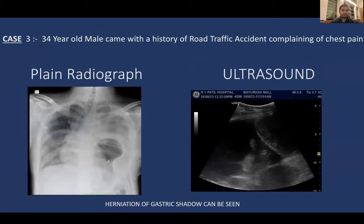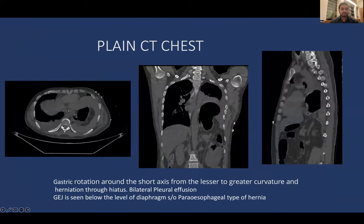Case 3: A 34-year-old male presented with chest pain following a road traffic accident, and also had a femoral neck fracture on the left side. Plain radiograph and ultrasound show a gastric shadow in the lower lung zone suggestive of herniation. CT chest shows gastric rotation around the short axis with herniation through the hiatus and bilateral pleural effusion. The gastroesophageal junction is seen below the level of the diaphragm, suggesting paraesophageal hernia type 2, where only the gastric content is herniated.